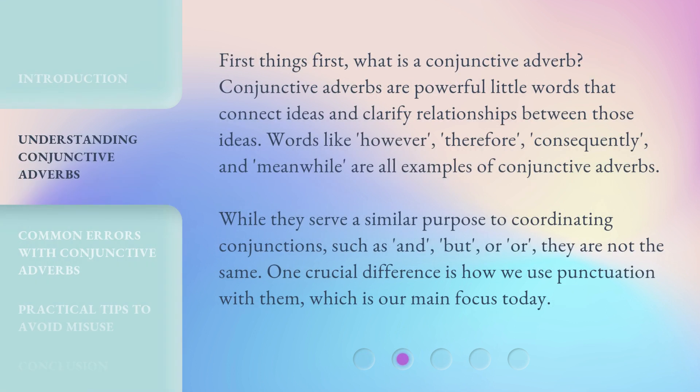First things first, what is a conjunctive adverb? Conjunctive adverbs are powerful little words that connect ideas and clarify relationships between those ideas. Words like however, therefore, consequently, and meanwhile are all examples of conjunctive adverbs.